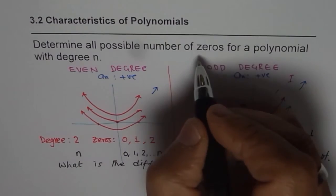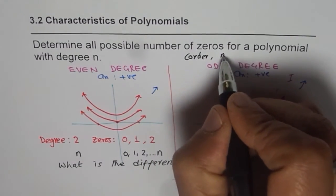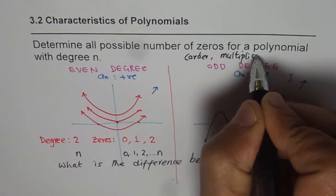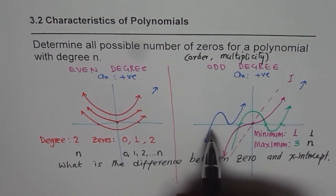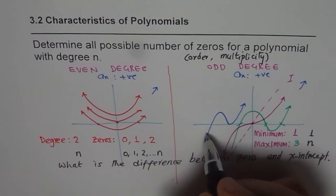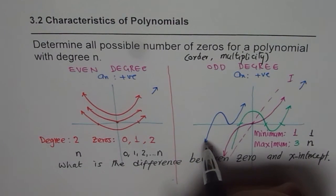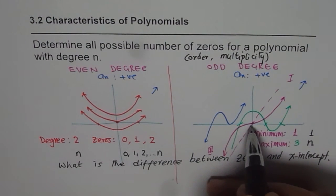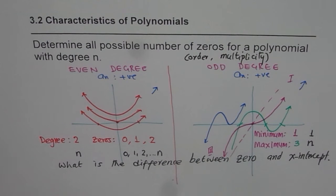Well, zeros have order or we say multiplicity. For example, this is a linear zero - it crosses the x-intercept. An x-intercept is a point where the graph crosses the x-axis. A zero gives you in addition to that more information - characteristics of the graph at that point. This one has an order of one, the zero crosses like a line. This zero has order of two, and this one has order of three. See the shape - it is very different. Take care of these shapes which will come handy to you when we will do graphing of polynomials.